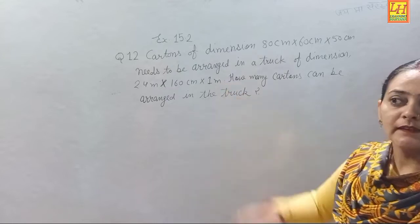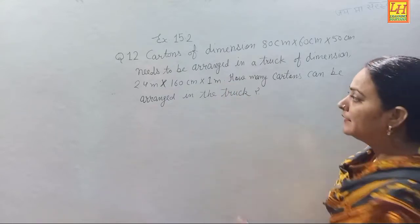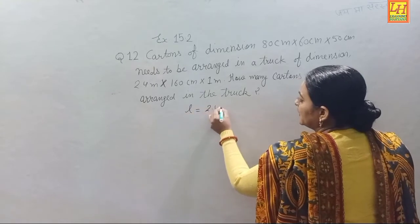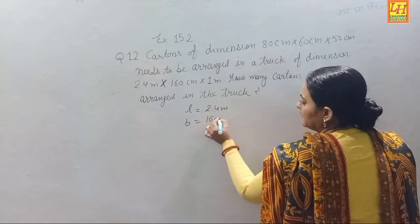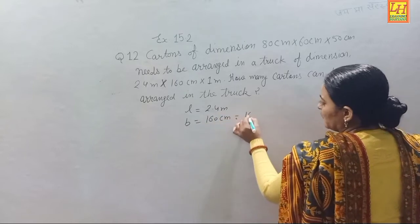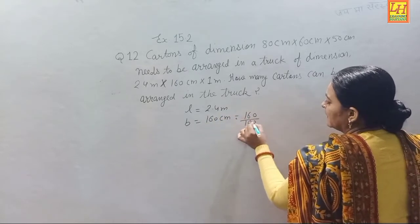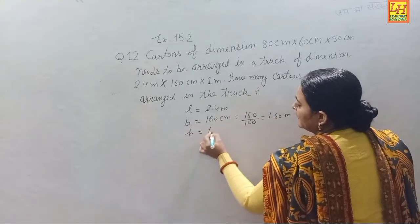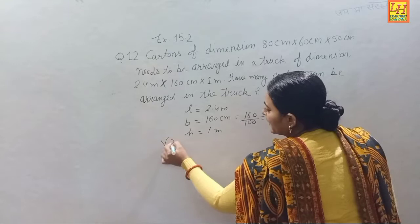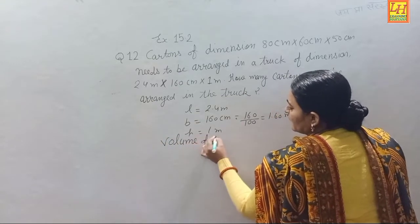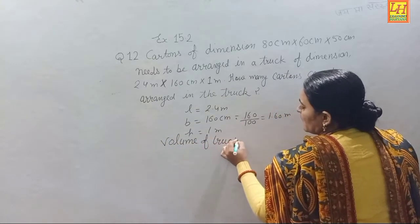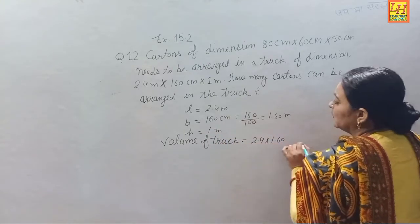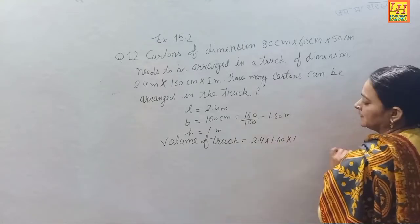The number of cartoons will be truck volume divided by cartoon volume. First, truck volume: truck length is 2.4 meter, breadth is 160 cm which is 1.60 meter, and height is 1 meter. So volume of truck = 2.4 × 1.60 × 1 cubic meter.